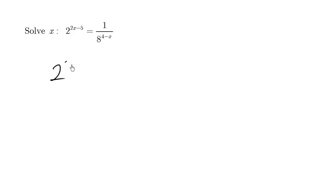So we have 2 to the 2x minus 5 equals 1 over this thing, but the 8 is going to be rewritten as the lowest base. So 2 to the 3 happens to be 8, 2 times 2 times 2 is 8, all to the 4 minus x.